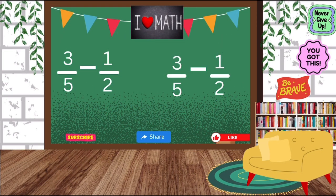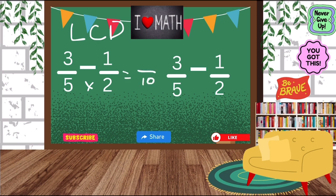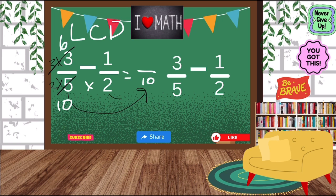Okay, so we have 3 fifths minus 1 half. We have it written twice to try both ways. First, we're going to look at our denominators and multiply them: 5 times 2 is 10. We need to change the 5 and the 2 into 10. To go from 5 to 10, we multiply by 2. Whatever I do to the bottom, I do to the top — so 3 times 2 turns into a 6 and the denominator becomes 10. Now for the 2: to go from 2 to 10, we multiply by 5. So 1 times 5 turns into a 5, and the denominator becomes 10.